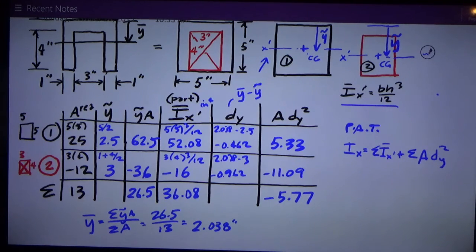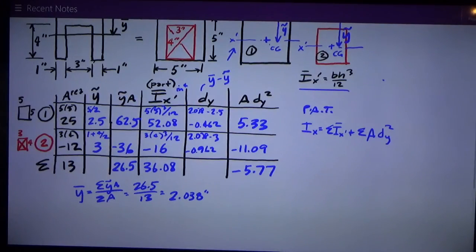Interesting to note and remember, I can never have a negative moment of inertia, but I can have a negative number in my A dy squared column and the summation of it. So now I'm almost there.